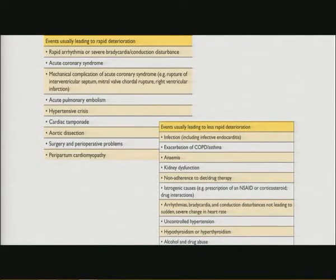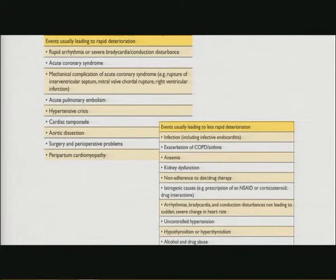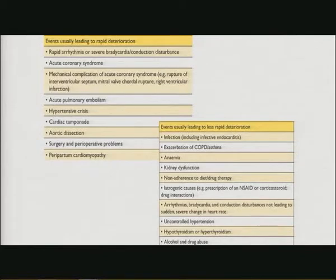When we talk about mechanical complications of acute coronary syndrome - rupture of the interventricular septum or the mitral valve - remember the mitral valve could rupture by itself if the patient has MVP, so don't look for an infarction to be sure there is a mitral valve rupture. We had a patient diagnosed with lung cancer whose CT actually showed only congestion. We treated him, he went to surgery, and he's doing quite fine.